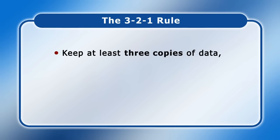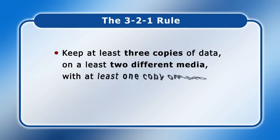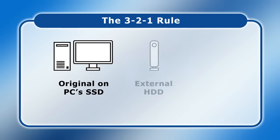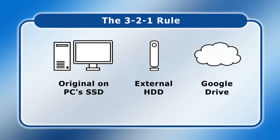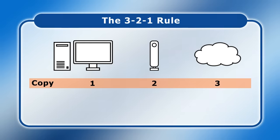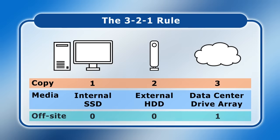For many years there's been a very helpful piece of backup guidance called the 3-2-1 rule. This states that we should keep at least three copies of our data on at least two different media and with at least one copy kept off site. So for example we may have the original or working version of a file saved on a PC's SSD or hard drive, a second copy on an external hard drive, and a third copy stored online. This makes use of local online, local offline and cloud storage, and meets the 3-2-1 rule by providing three copies of data on at least two different media with one copy retained off site.